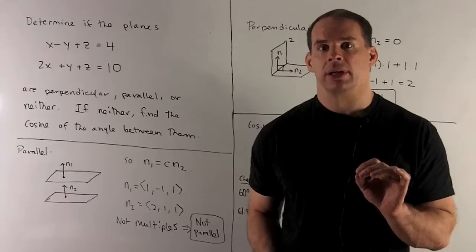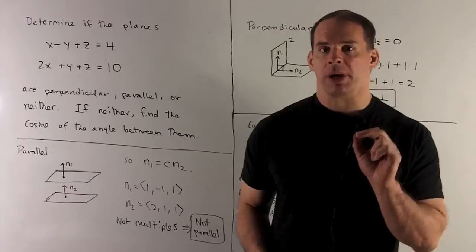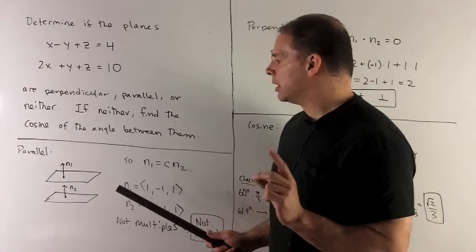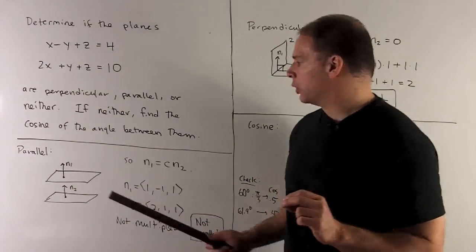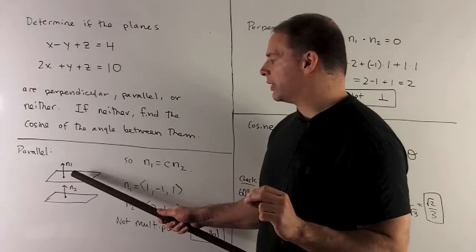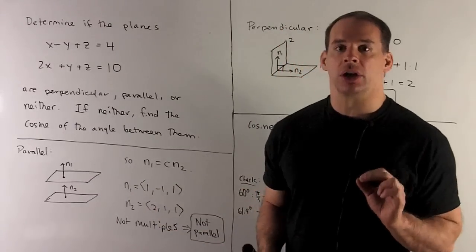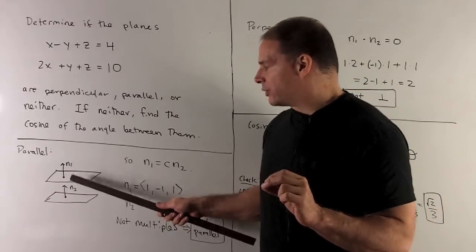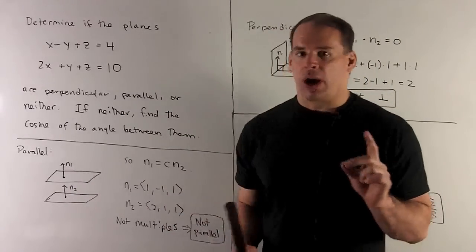First, parallel. Let's draw a picture of two parallel planes like so. So one thing we'll note, the normal directions. Those are going to be the directions that are perpendicular to our planes. If we're parallel, note by the way I've drawn them, we're pointing in the same direction.